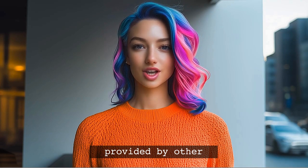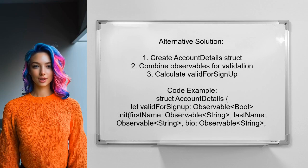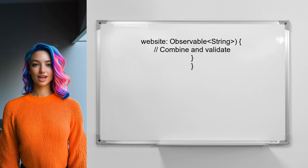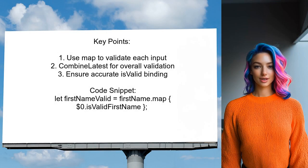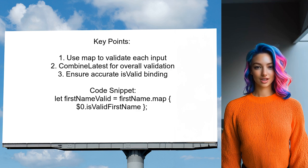Now let's look at the answers provided by other users. An alternative approach suggested by a user involves creating an account detail struct that combines the observables for first name, last name, bio, and website. This struct calculates the valid for signup property based on the validity of each input. Each input is mapped to a validity check, and the valid for signup observable is updated whenever any of the inputs change. This ensures that the binding to is valid only triggers after all properties are set correctly.